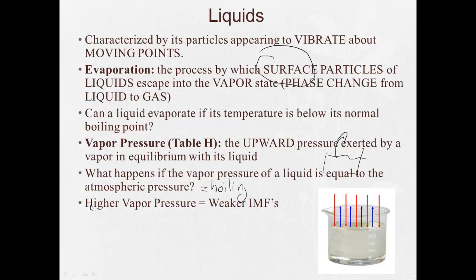Higher vapor pressure: liquids with higher vapor pressure have weaker intermolecular forces. Liquids with lower vapor pressure have stronger intermolecular forces. So if we think of these in terms of IMFs, things with lower vapor pressure will have hydrogen bonding or stronger polar molecules—stronger dipole-dipole forces. Weaker will be dispersion forces.